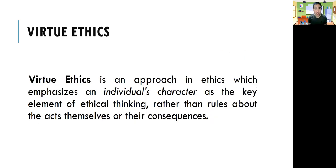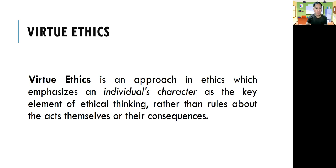Now we study virtue ethics. Virtue ethics is an approach in ethics which emphasizes an individual's character as the key element of ethical thinking, rather than rules about acts themselves or their consequences. One of the main strands of virtue ethics is eudaimonism, which holds that the proper goal of human life is eudaimonia — variously translated as happiness, well-being, or the good life — and that this goal can be achieved by a lifetime of practicing virtues, subject to the exercise of phronesis, or practical wisdom.